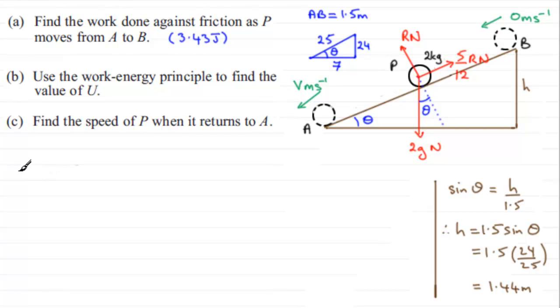So let's start with that equation then. The loss in gravitational potential energy, GPE, is equal to the gain in kinetic energy, KE, plus the work done against friction. And we can now fill in our values into this equation. So what we've got is the loss in gravitational potential energy, MGH, is going to be the mass, 2 kilograms, G we know is 9.8, and we worked out H, that was 1.44.